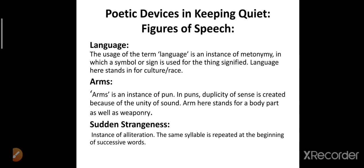First is language. Language here stands for different cultures or different races, because language separates us on the basis of culture or race. The use of language is an instance of metonymy, which is a symbol or sign used for things signified — when we use a word to signify something, that instance is called metonymy. So the poetic device in the word 'language' is metonymy.